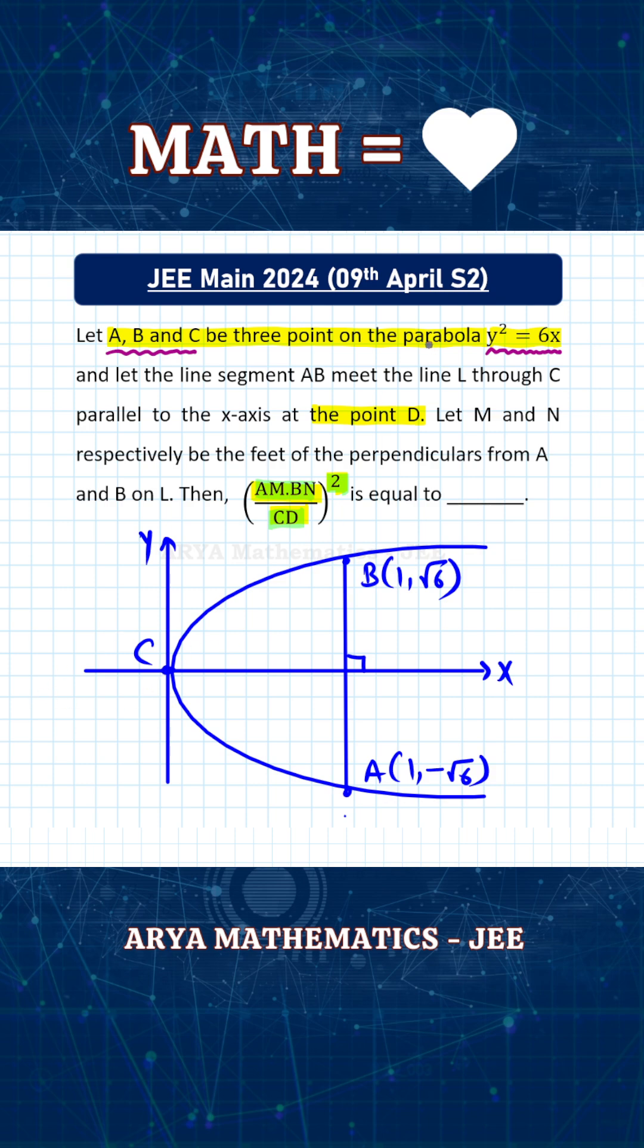So now a line passing through C and parallel to the x-axis will be nothing but the x-axis itself. So the x-axis is the same as line L, and D is the point of intersection of AB with line L. That means this point will be D, and the coordinate of point D will be (1, 0).